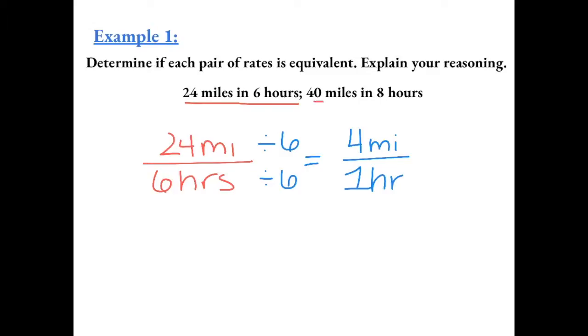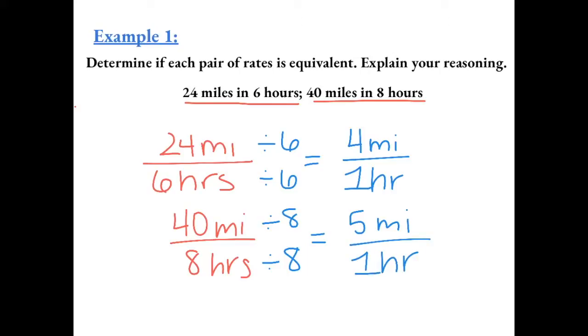Then we have 40 miles in 8 hours. Let's find the unit rate by dividing by the denominator. This gives us 5 miles in 1 hour. These are not equivalent because 4 miles per hour and 5 miles per hour are not the same.